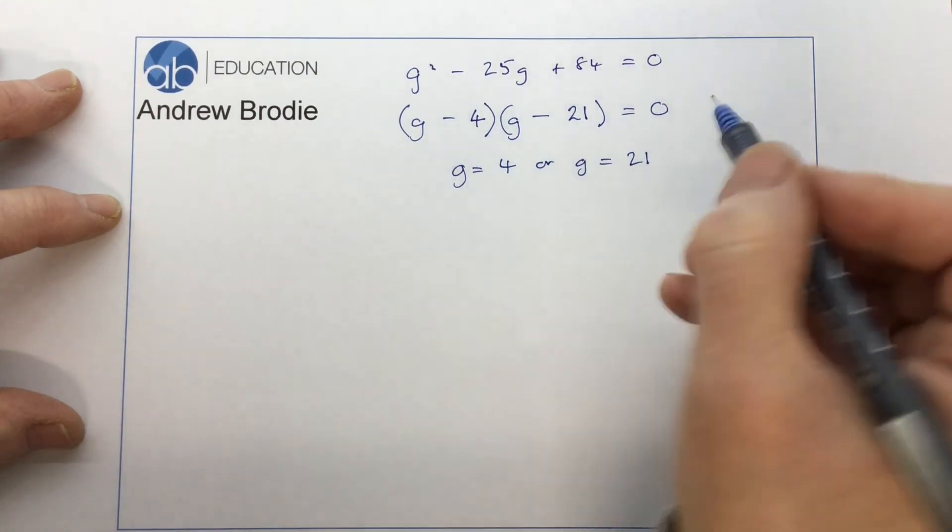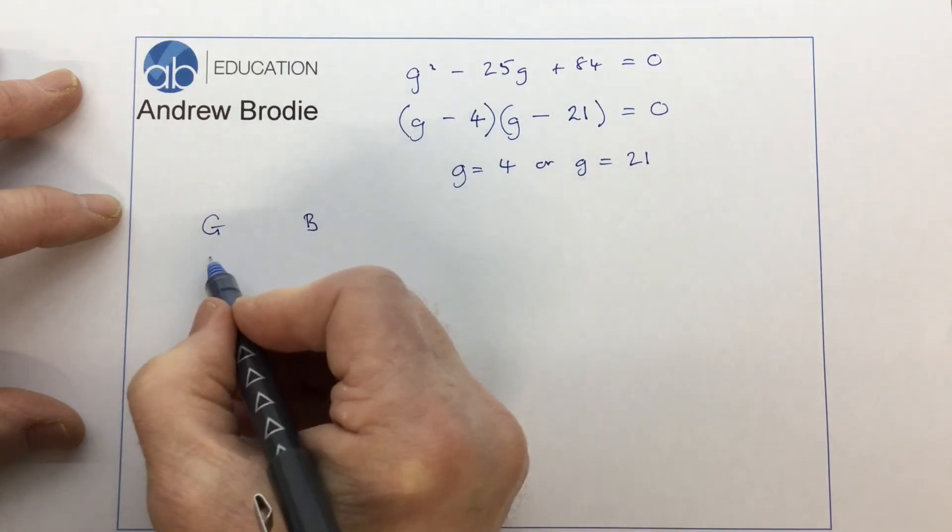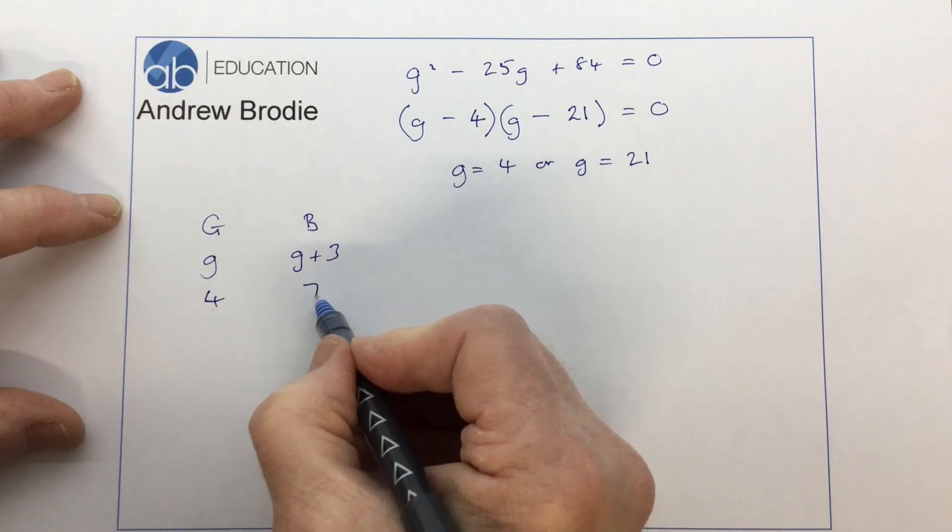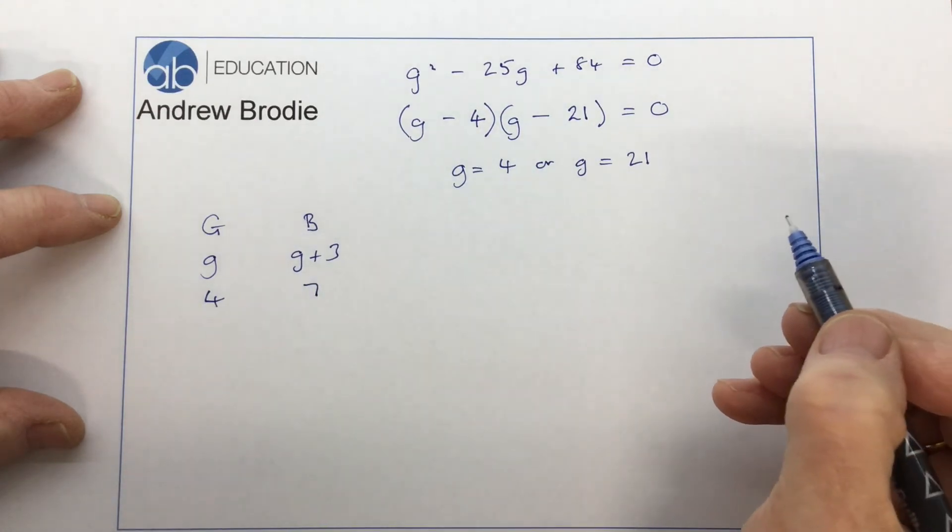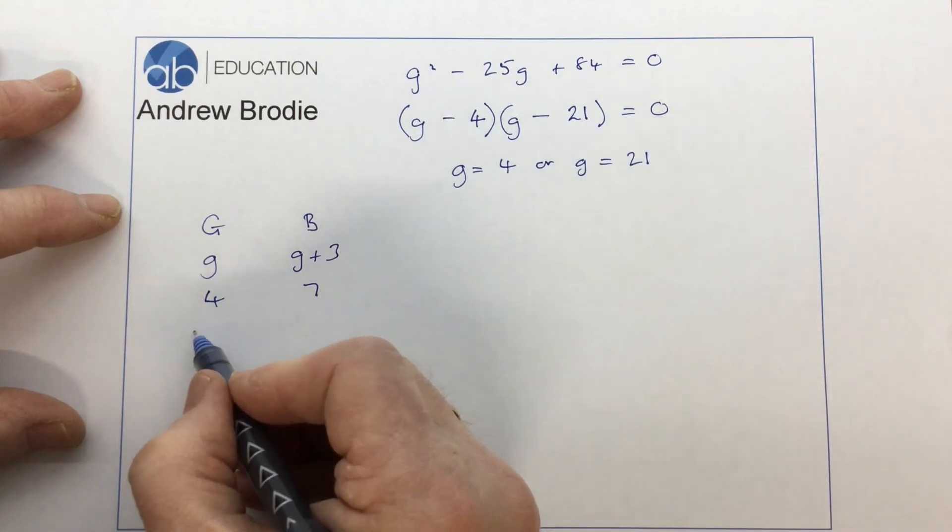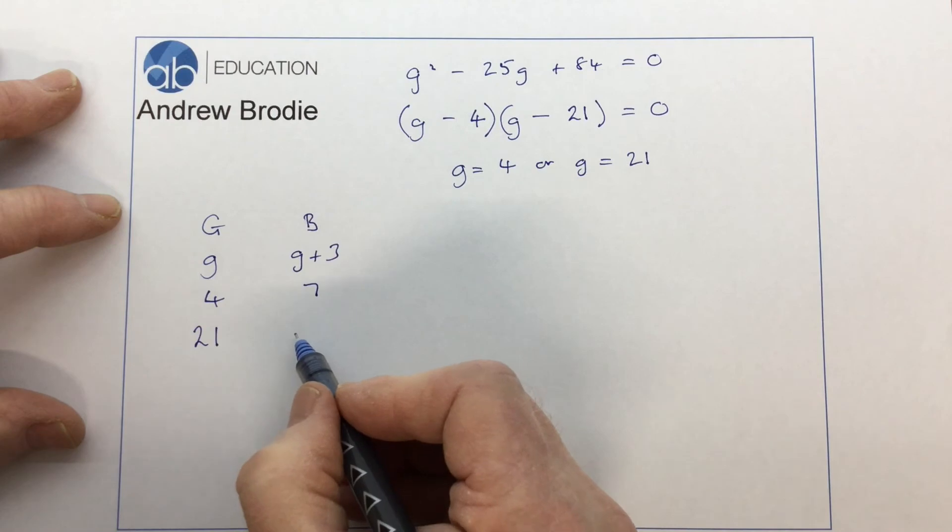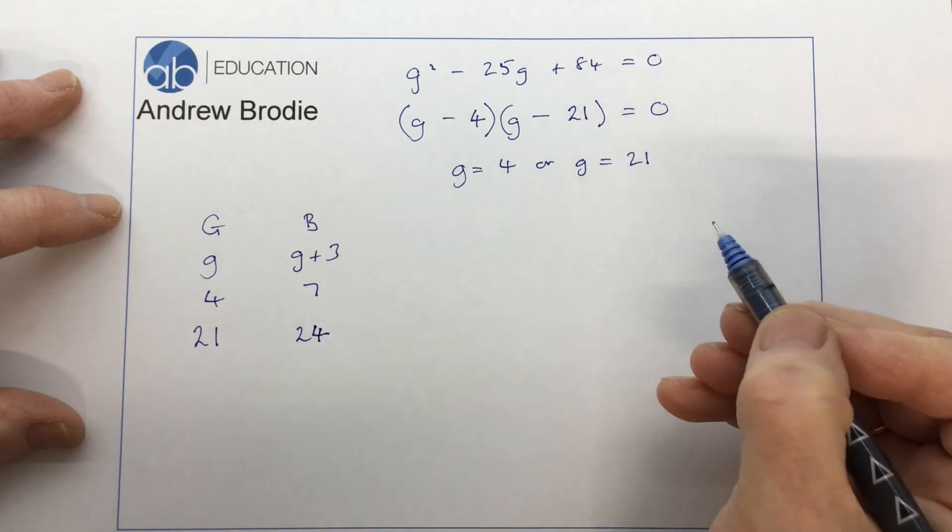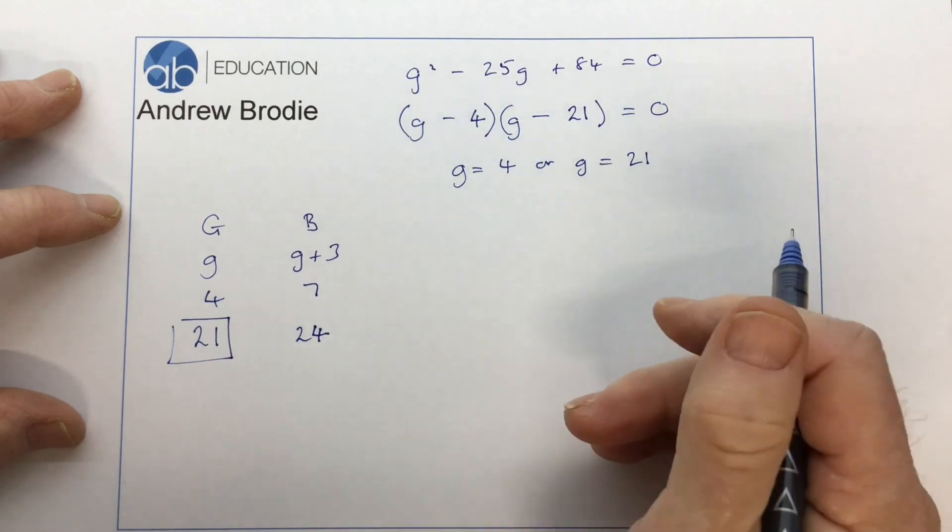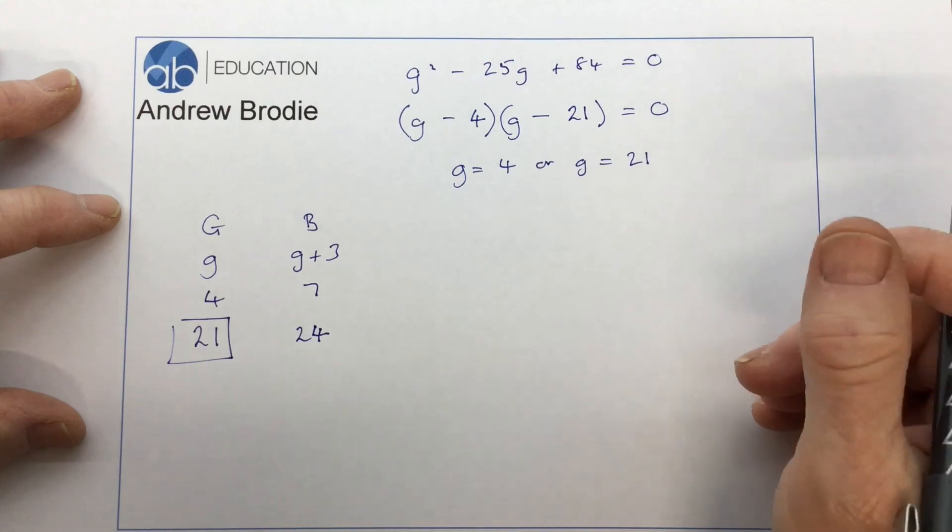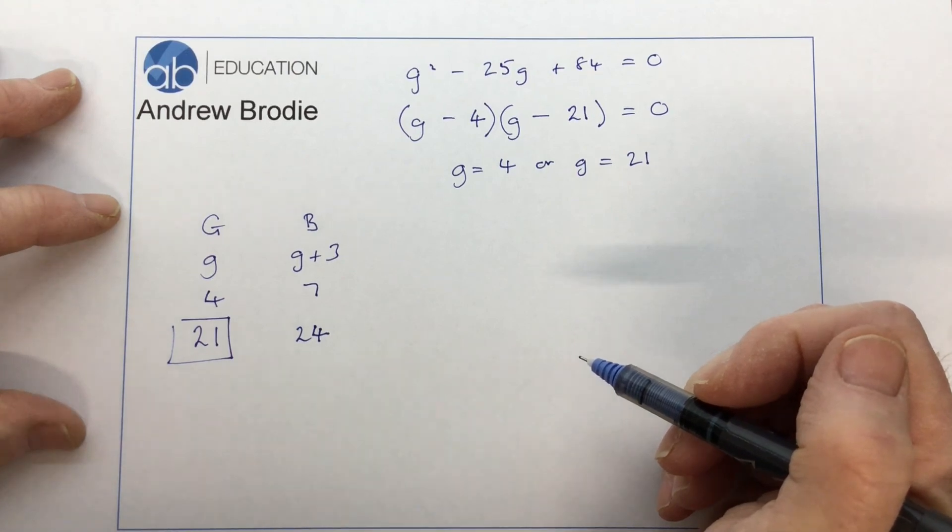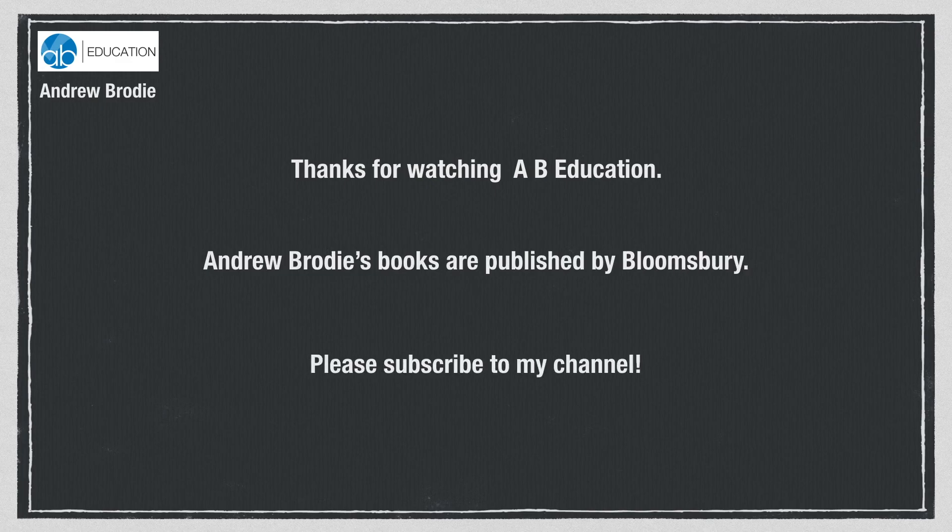Now let's assume g is 4. That would mean the green would be 4 and blue would be g plus 3, so 7. But 4 plus 7 is 11. And if you remember, we had to have more than 12 pencils in the box. So I think it's going to be the 21. And 21 plus 3 is 24. The question we had was, how many green pencils are there? The answer is 21. And you can actually check this by putting these figures into the probability tree, and you will find that it will work out. So there we are. Final answer: number of green pencils is 21. Thanks for watching.